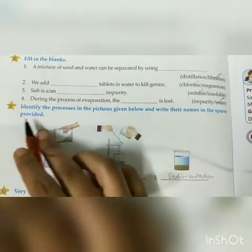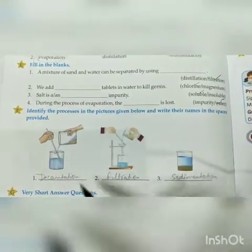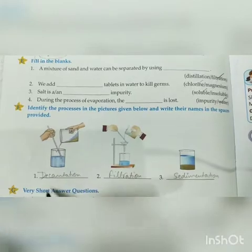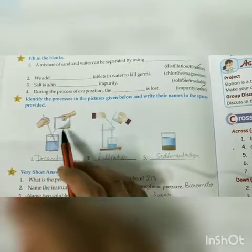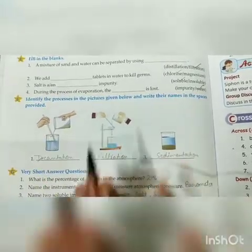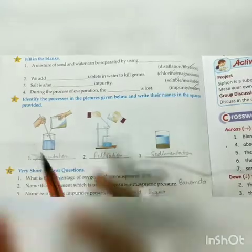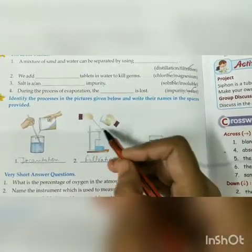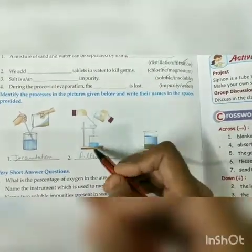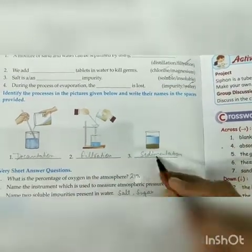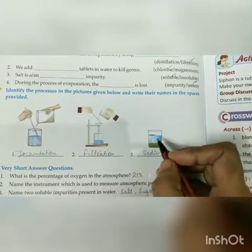Question number F: Identify the processes shown in the pictures. One picture shows the process of sedimentation, in which a layer of sediment or impurity is at the bottom and clear water is above it.